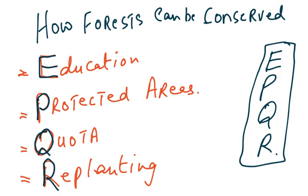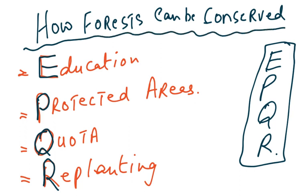How can forests be conserved? We've talked about the effects of deforestation, so how can they be conserved? First, education of the people that we should not cut down forests, we should use less wood to make paper — less paper use means fewer trees cut down. We should tell people that even if you cut down trees, you need to plant new ones. Then protected areas — where there are old trees and forests of great medicinal value, those areas should be protected with no buildings constructed and no cutting of trees or plants.